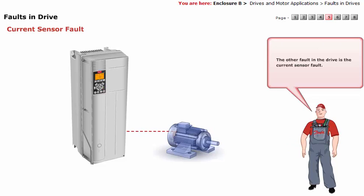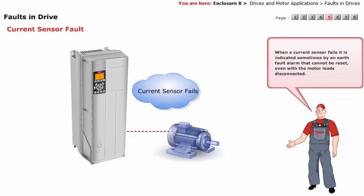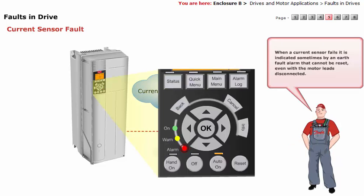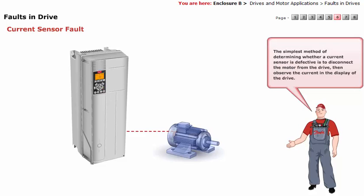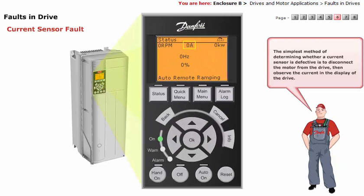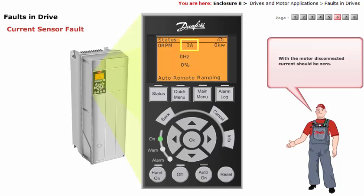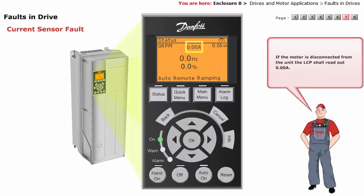The other fault in the drive is the current sensor fault. When a current sensor fails, it is indicated sometimes by an earth fault alarm that cannot be reset, even with the motor leads disconnected. The simplest method of determining whether a current sensor is defective is to disconnect the motor from the drive, then observe the current in the display of the drive. With the motor disconnected, current should be zero. If the motor is disconnected from the unit, the LCP shall read out 0.00. If anything else is shown, this indicates a defective current sensor.